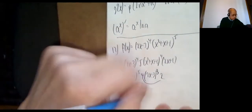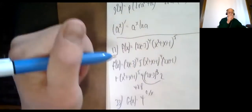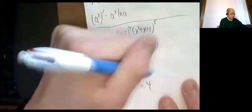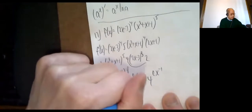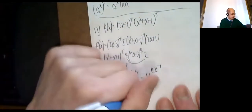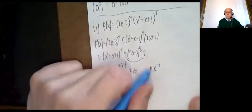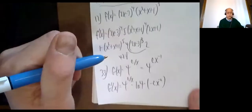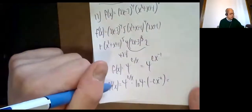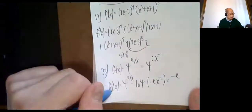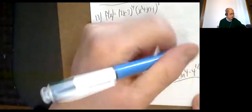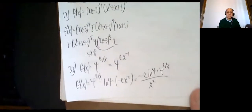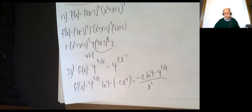3.4 number 33: 4^(c/x), which you should treat as 4^(cx^(−1)). So the derivative is 4^(c/x) · ln 4 times the derivative of the exponent c/x, which is −cx^(−2). Putting the negative exponent in the denominator: the final answer is −c · ln 4 · 4^(c/x) / x².